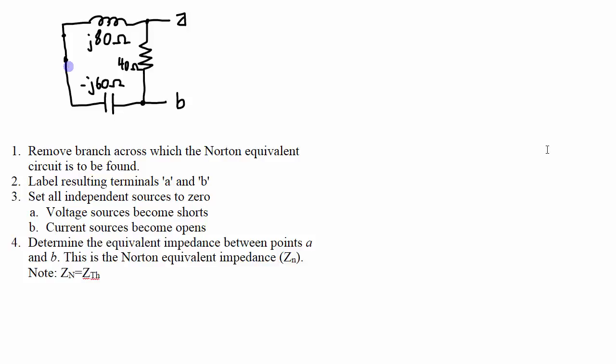The fourth thing to do is determine the equivalent impedance between points A and B. This is the Norton equivalent impedance, Zn. And note that Zn and Zth are actually the same thing, so if you are doing Thevenin's theorem, everything up until this point is going to be identical.